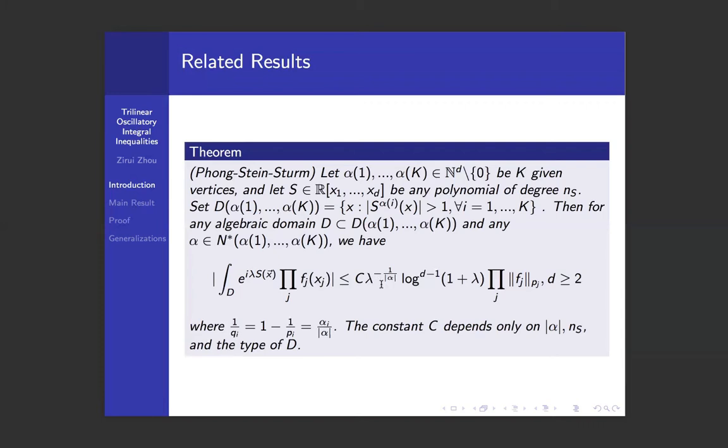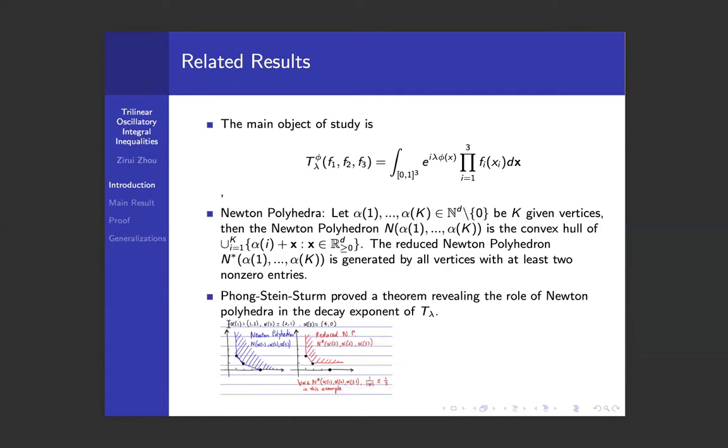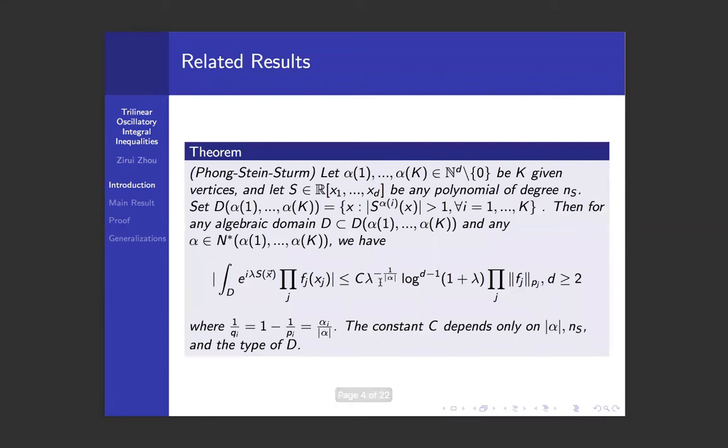To give an example, let's look at the previous set of multi-indices. Suppose we're in dimension 2 with a polynomial phase and an algebraic domain D satisfying that ∂_x∂²_y φ and ∂²_x∂_y φ and ∂⁴_x φ are all uniformly bounded below on the domain D. Then the best decay rate we can expect, as seen in this red picture, will be -1/3. The way to see that is to look at the intersection of the diagonal with the boundary of the reduced Newton polyhedra. The inverse of that number will be the best decay exponent that one can achieve in this theorem.